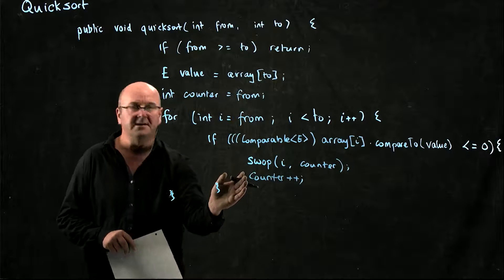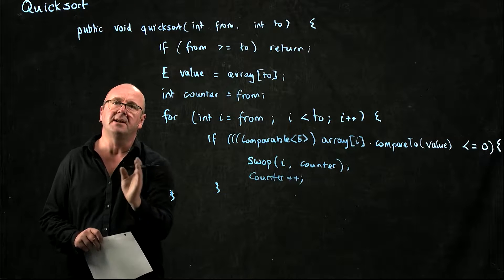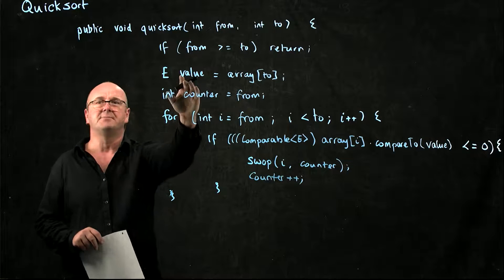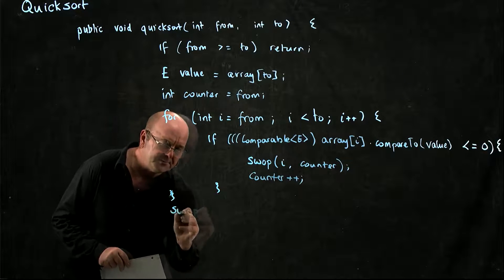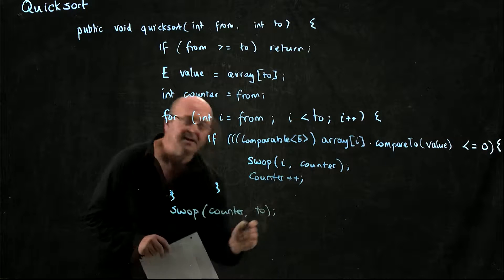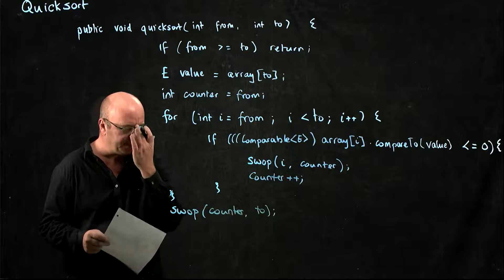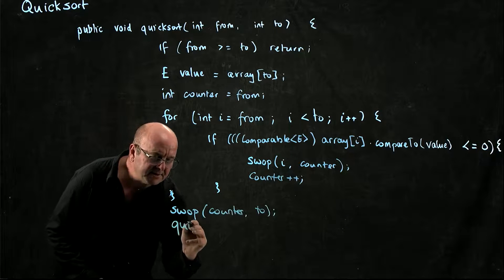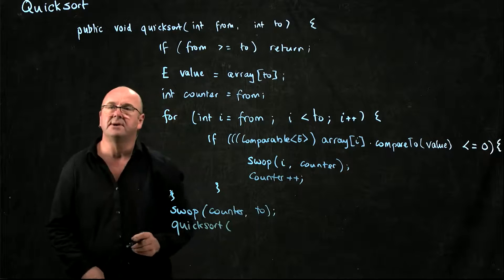Now the counter holds the first position of the thing larger than our pivot point. And so we need to swap `counter` and `to` — `to` is the position in the array where we have our pivot point. And then we need to process the left-hand side of the array.